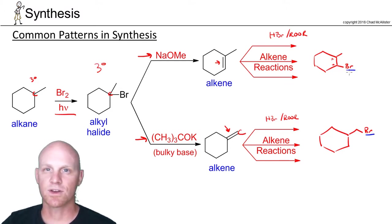So real common pattern in synthesis, when you can form both a most substituted Zaitsev alkene or a least substituted Hoffman or anti-Zaitsev alkene, and then your different alkene reactions will end up with different substituents in different locations. Real common pattern in synthesis.